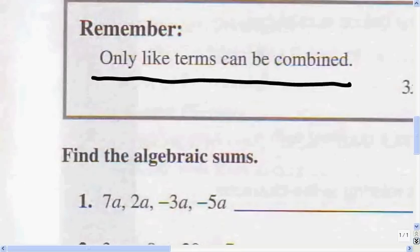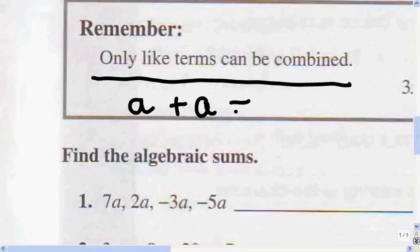The variable is the letter. So if I have a plus a, I can add the two a's because they're like terms. So a plus a is 2a, because I've got 2 a's.